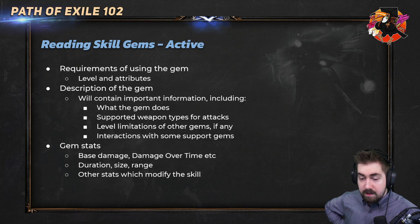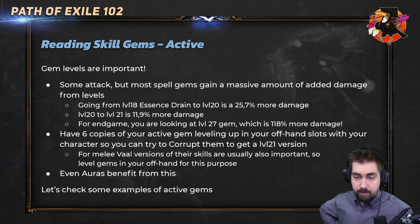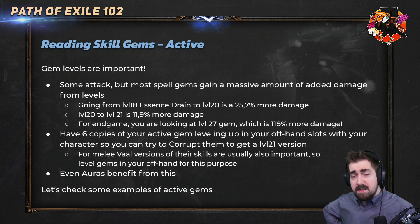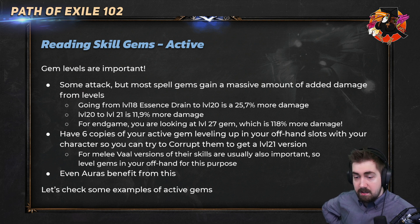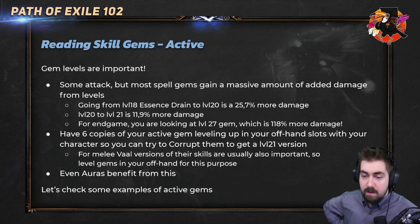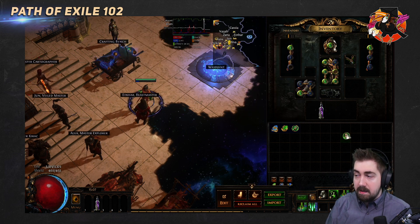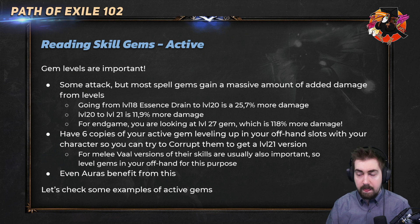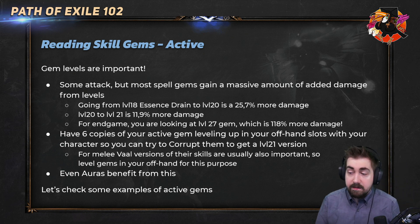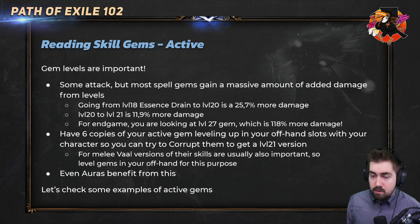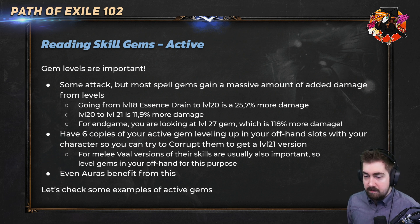Gem stats show you base damage, damage over time, duration, size, range, and other stats that modify the skill. Gem levels are super important — for spell gems, it's basically 12% more damage per gem level. Attack gems will sometimes get as little as 1% or 2%, so a very big difference. Going from level 18 to level 20 is 25% more damage. For a fully powered end-game character, you can reach as high as gem level 27, which is 118% more damage.